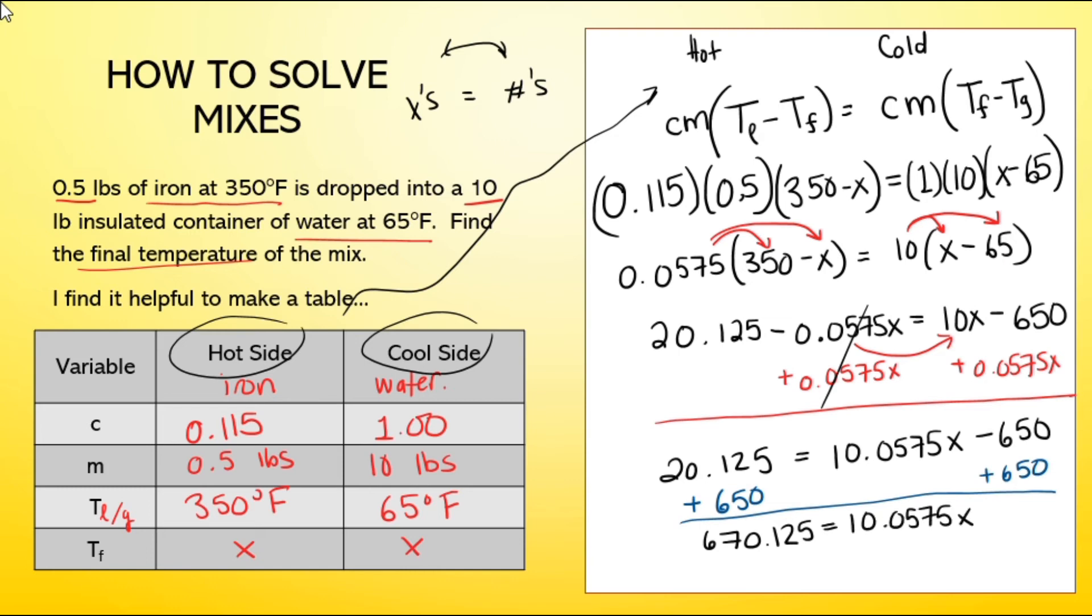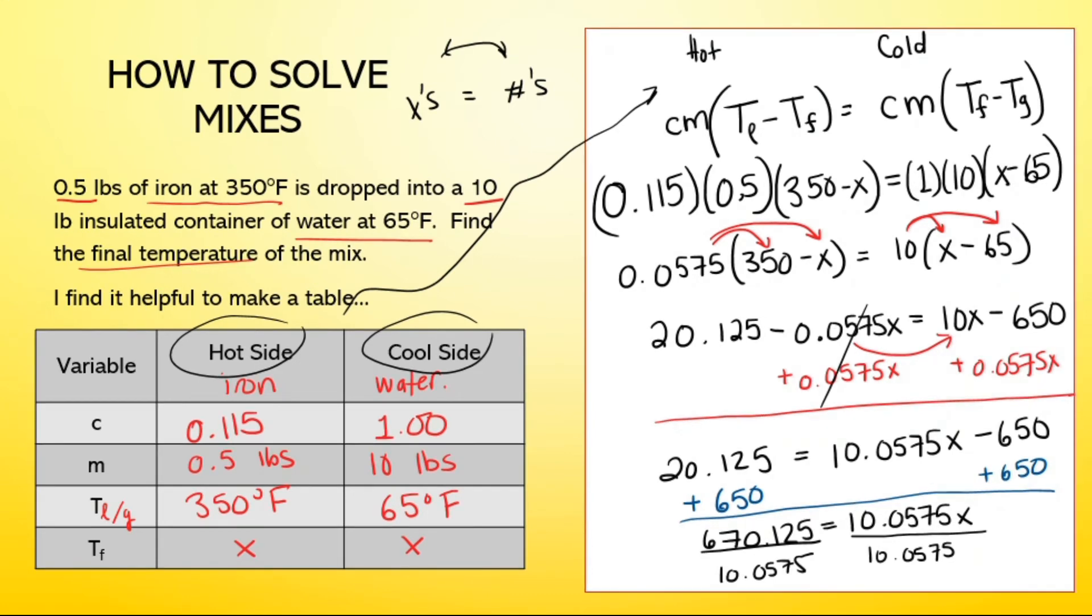Last step in algebra, isolate X by dividing both sides of the equation by whatever is stuck to the X. I'm going to divide both sides by 10.0575 to get it off the X. On the right side, that's just going to cancel because same thing, same thing equals 1. We do the division on the left side. And we're going to end up with X equals 66.6 degrees Fahrenheit.